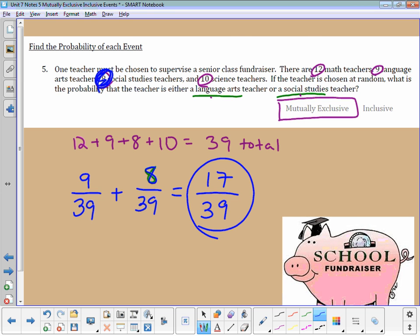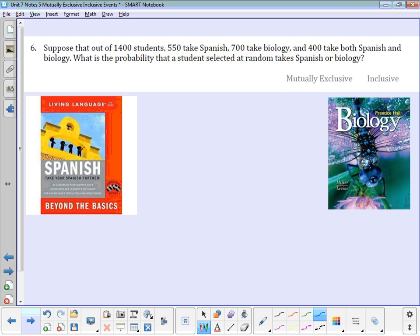In number 6, we are looking at 1,400 students. 550 take Spanish, 700 take Biology, 400 take both. Both, key word there. So that means that out of the 550 students who take Spanish, 400 of those were also counted in the Biology category. So these are inclusive events that we're going to have to take away.